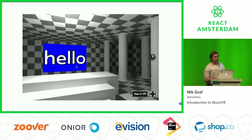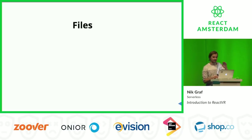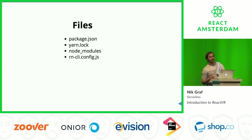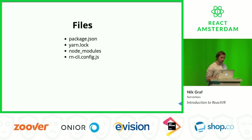This looks pretty cool, but let's dissect the whole thing. What's in the boilerplate? First, there's a package.json — familiar, easy start. There's a yarn.lock file, there's node_modules. There's an rncliconfig.js which stands for React Native CLI. Why is React Native in there when it's React VR and we're on the web? Well, VR needs absolutely high performance — the goal is 90 frames per second on the VR device itself.